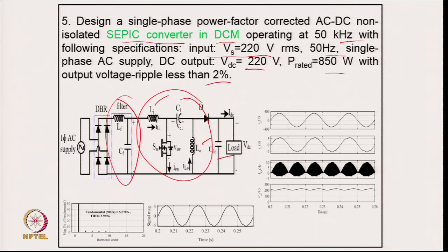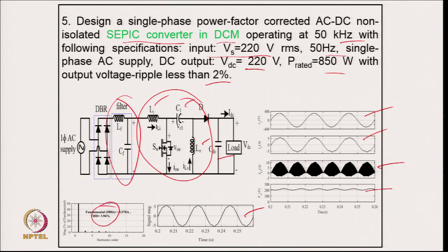After designing the converter and simulating the model, the waveforms show supply current in phase with supply voltage and almost clean with no reactive power burden and very low high-order harmonics. The input inductor current is in discontinuous mode. The output voltage is well regulated, and the harmonic spectrum of the supply current shows a THD of 3.96 percent, well below 5 percent.